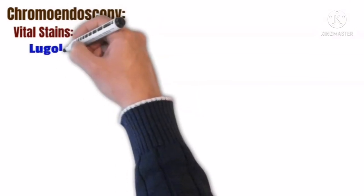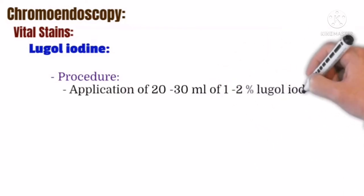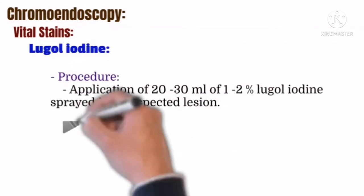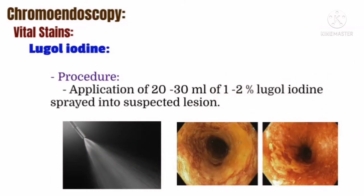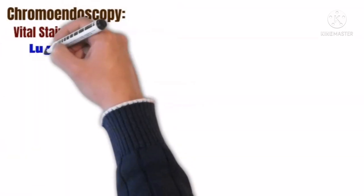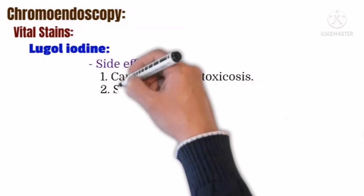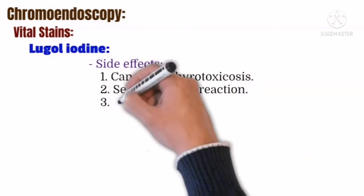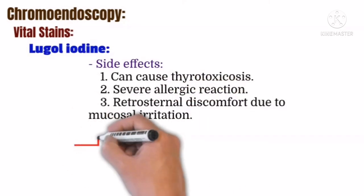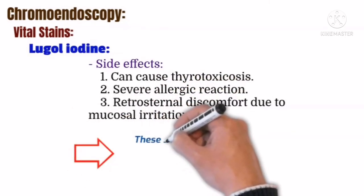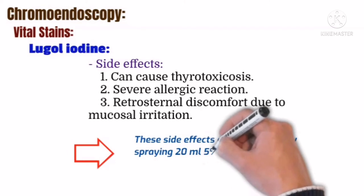The image shows the lesion by white light and after staining by Lugol's iodine. Lugol's iodine chromoendoscopy is applied using 20-30 ml of 1-2% Lugol's iodine sprayed onto the suspected lesion. Side effects include thyrotoxicosis, severe allergic reaction, and retrosternal discomfort due to mucosal irritation. These side effects can be reduced by spraying 20 ml of 5% sodium thiosulfate solution after chromoendoscopy.